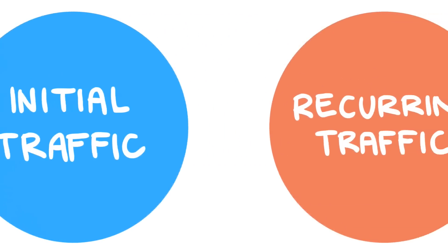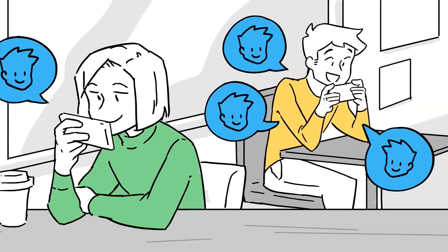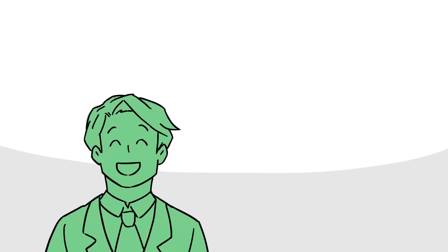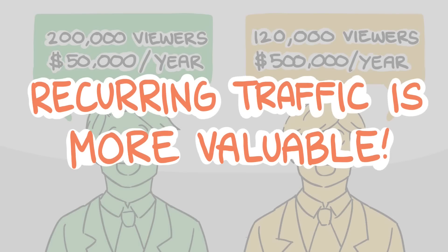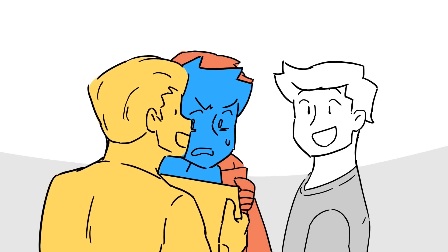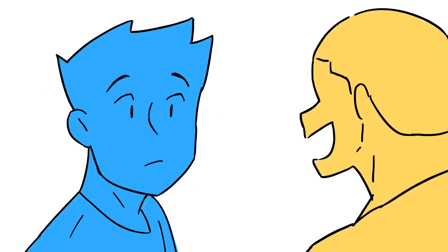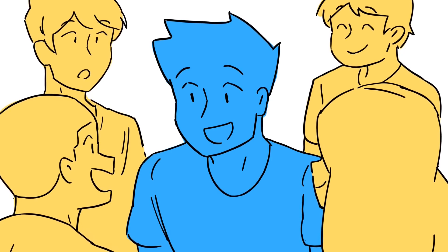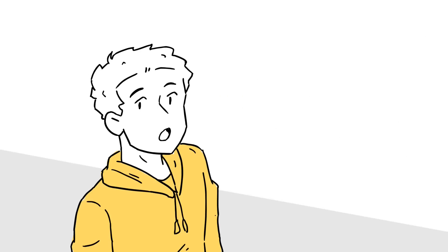The second component of any successful online business is what's called recurring traffic. Initial traffic is getting someone to take a look at your content one time; recurring traffic, on the other hand, is getting them to come back for more. You don't technically need recurring traffic to run a successful online business, but the difference between a business that makes $50,000 a year and one that makes $500,000 a year almost always lies in how they approach recurring traffic, because recurring traffic is more valuable. We live in a society where everyone's fighting for your attention, so it's extremely easy for someone to forget about you. But if you get people to come back over and over again, a stronger relationship is formed, there is more trust, and it becomes significantly easier to sell your products and services. People are more likely to buy from someone they know and trust — it's just human nature.